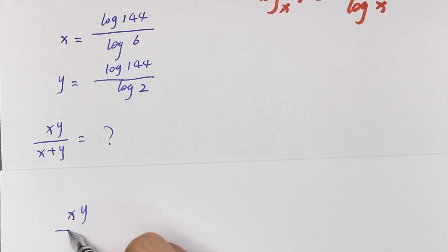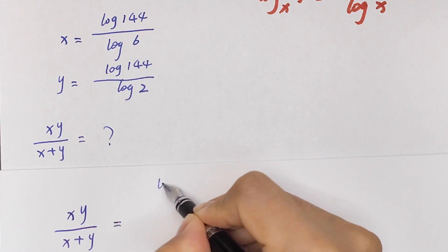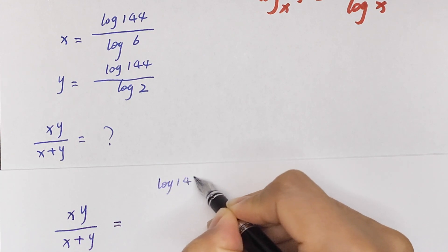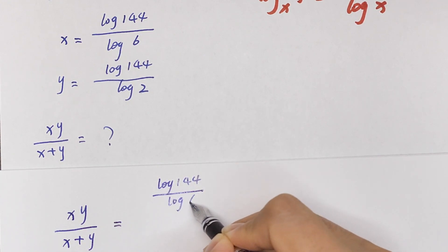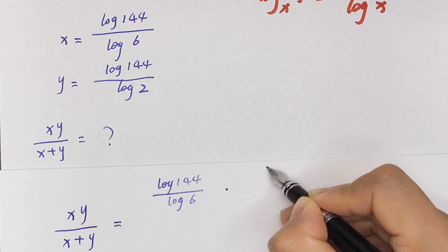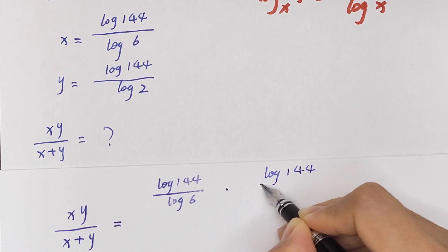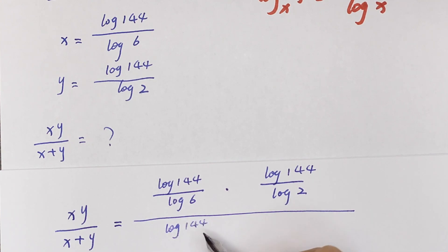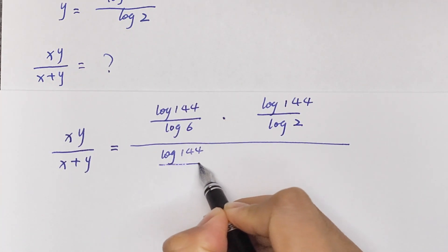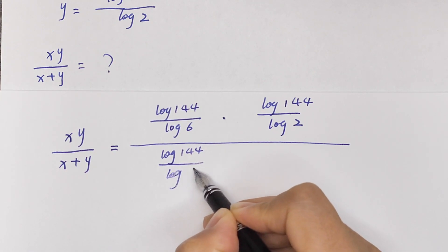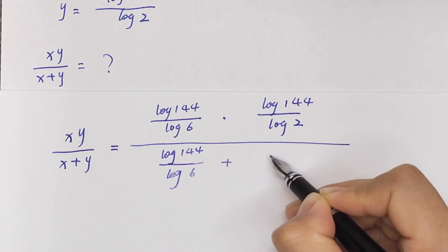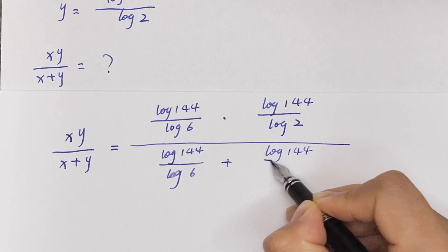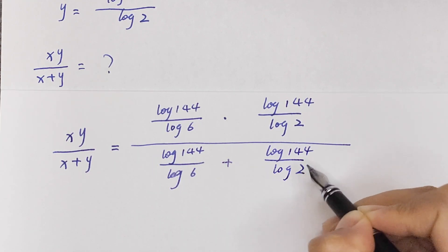xy over x plus y equals log 144 over log 6 times log 144 over log 2. And in the denominator, log 144 over log 6 plus log 144 over log 2.